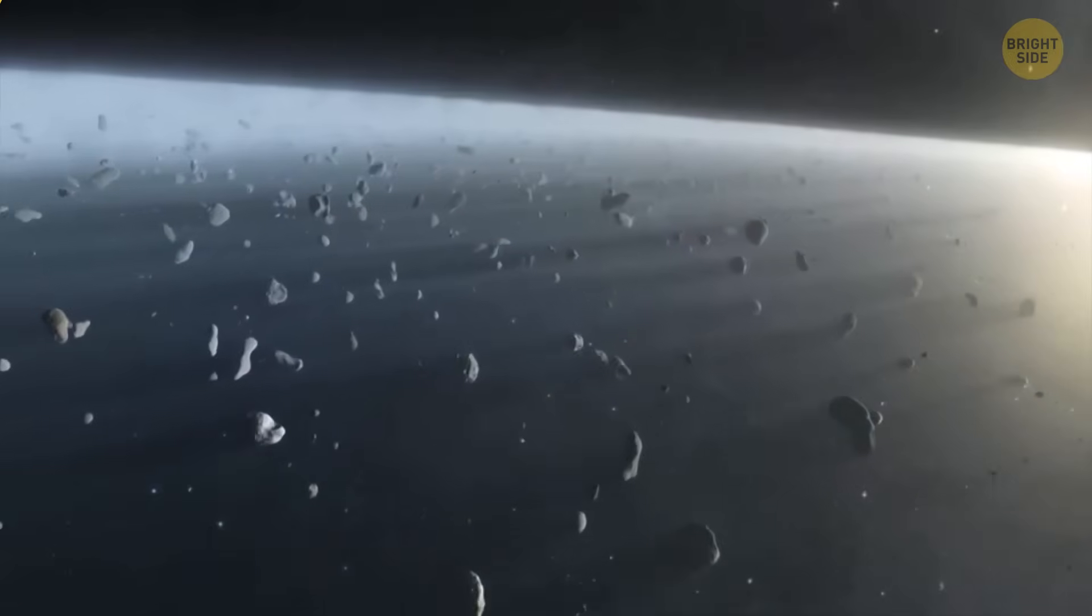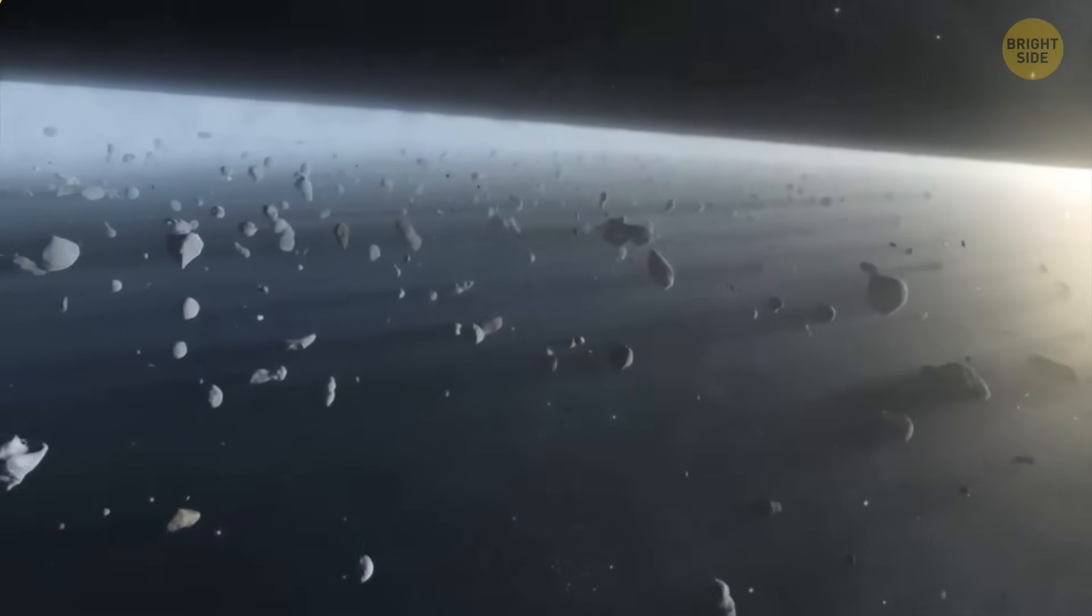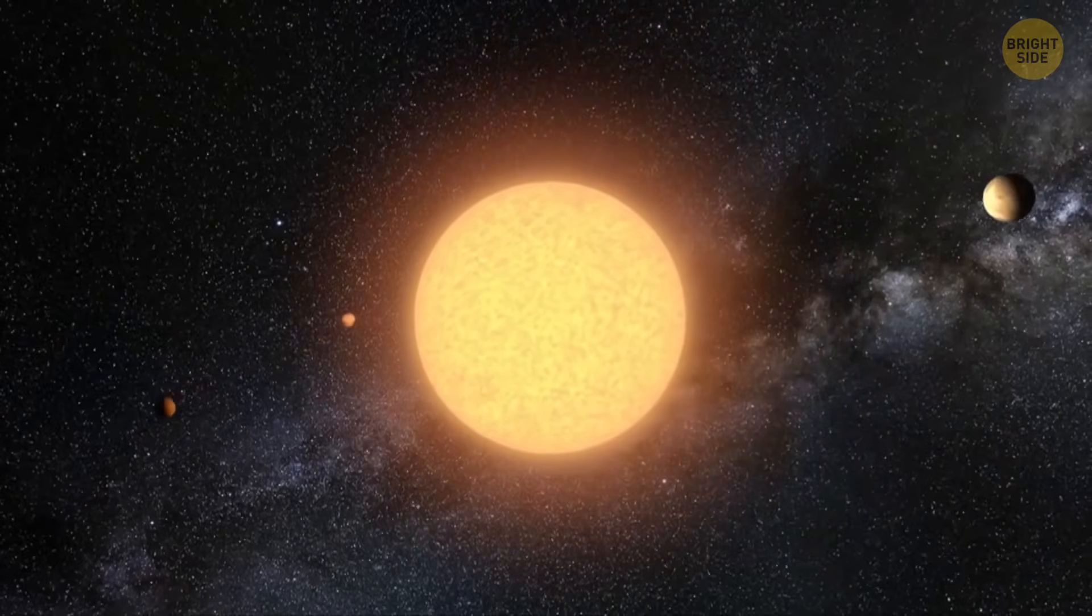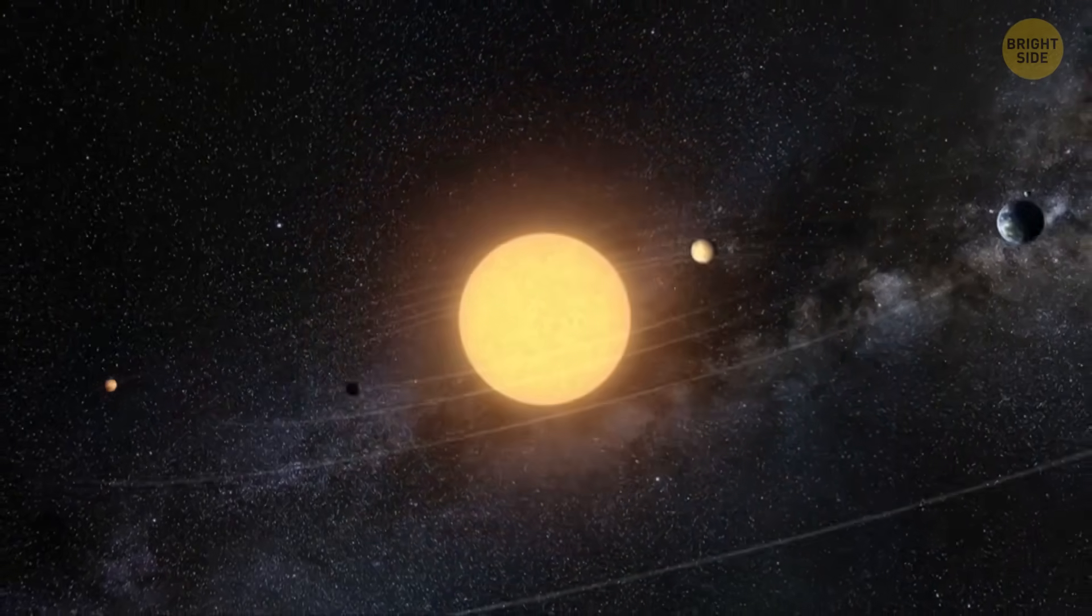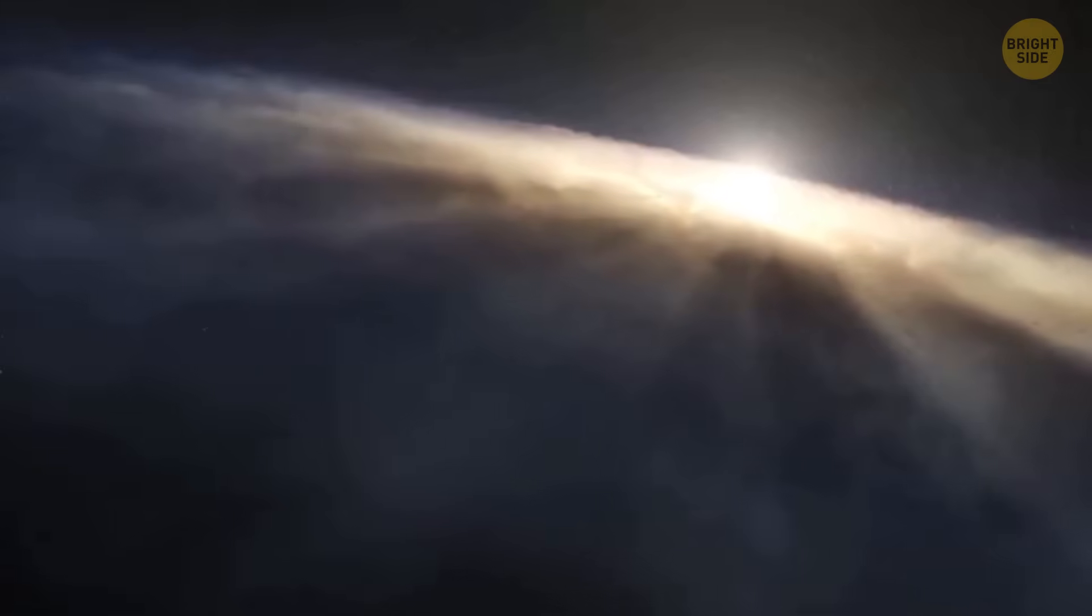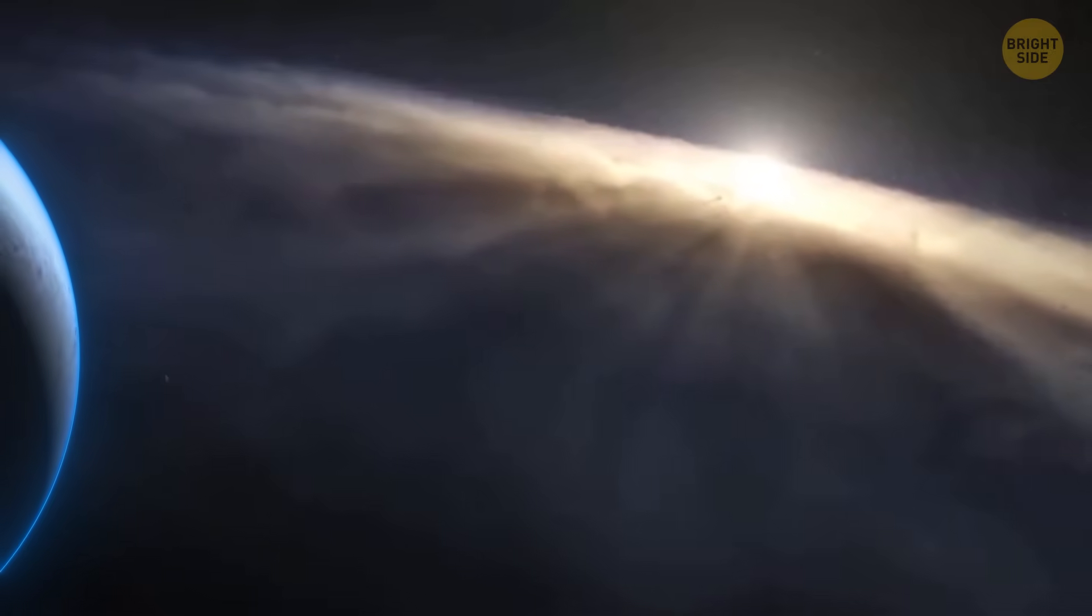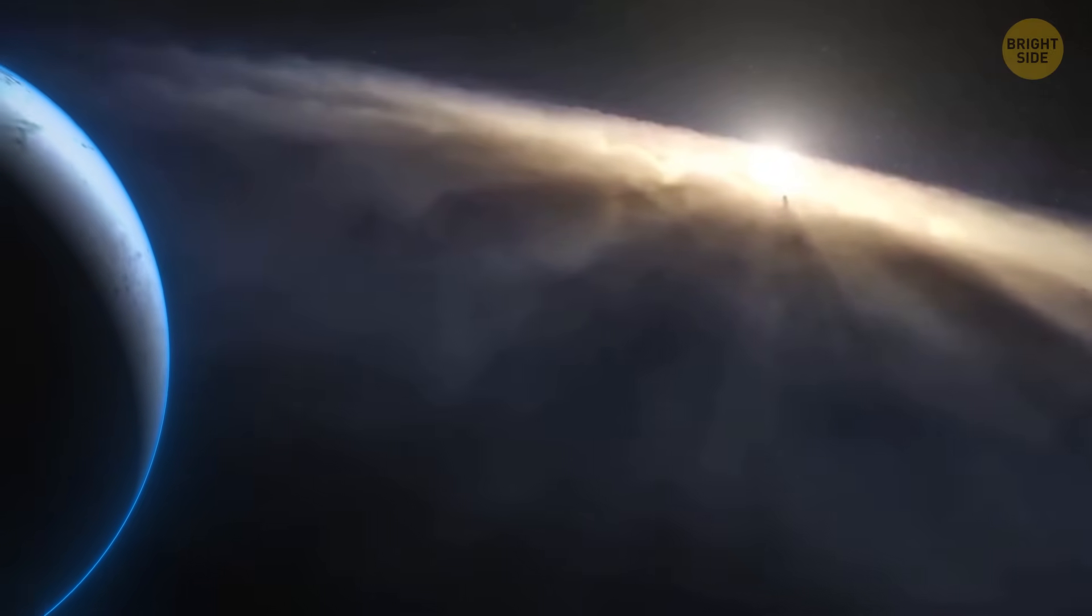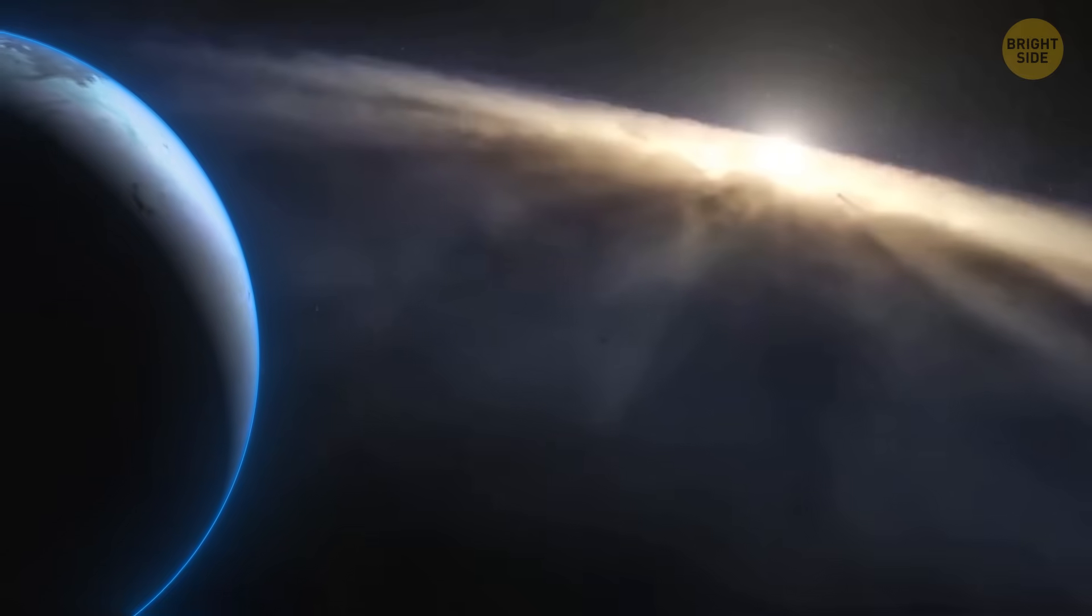Dwarf planets and other small objects dwelling there refuse to cluster together. Instead, they follow particular orbits, which is weird. The reason might be a large, mysterious planet hiding beyond Pluto. Its gravity might be messing up the orbits of those Kuiper space bodies.